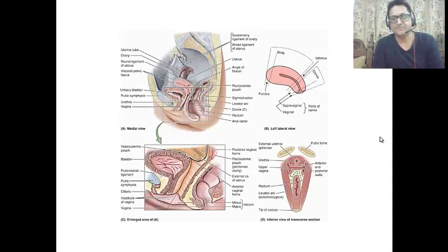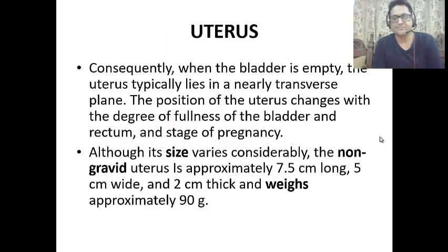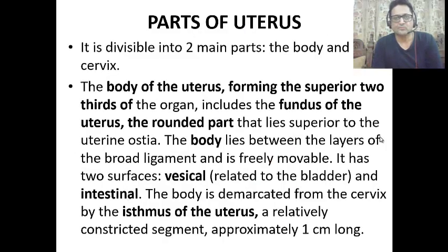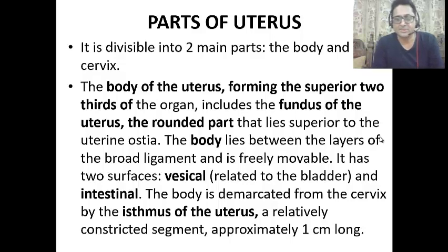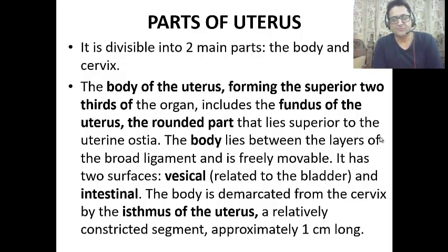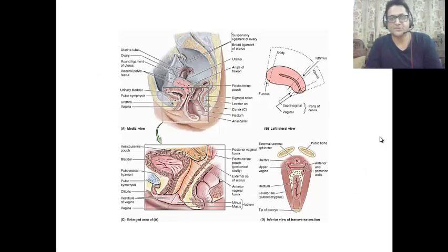The body forms two-thirds of the uterus and the cervix is the lower one-third. The body lies between the layers of the broad ligament and is freely movable. It has two surfaces: the vesical surface, which is related to the bladder, and the intestinal surface, which is related to the intestine, such as the sigmoid colon.